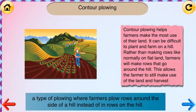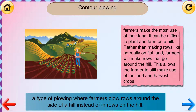Contour Plowing: A type of plowing where farmers plant rows around the side of a hill instead of in rows on the hill. Contour plowing helps farmers make the most use of their land. Rather than making rows like normally on flatland, farmers will make rows that go around the hill, allowing the farmer to still make use of the land and harvest crops.